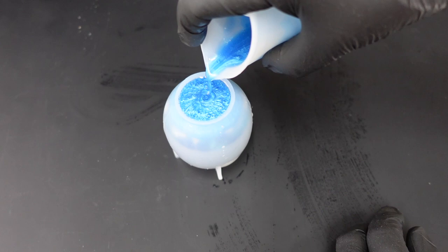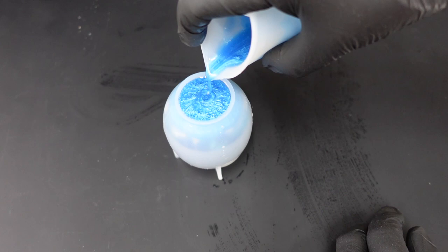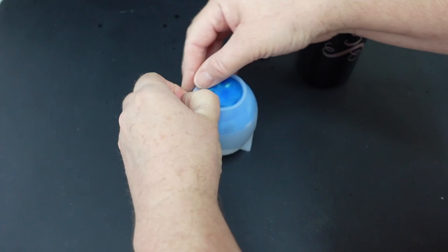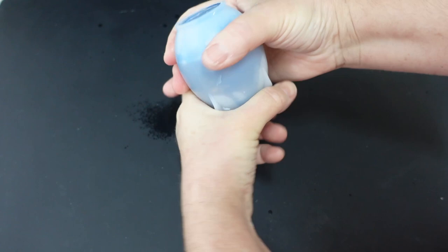So this is the following day and I need to demold. Now the best way I've found to demold is to put some kind of liquid, either washing up liquid, isopropanol alcohol or even the touch of silicon oil between whatever it is you're demolding and the mold. You just squish it all around and out it pops.